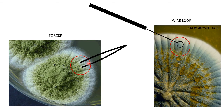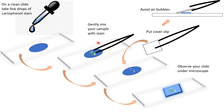When picking up your sample, prefer forceps over a wire loop. With a wire loop, you tend to get mostly fungal spores because scraping the colony breaks the hyphae, and you miss the mycelial structures. With forceps you preserve hyphae intact. If forceps are unavailable, you can use a wire loop, but forceps are preferable.